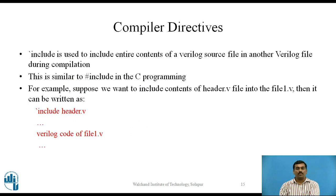The second most important compiler directive is backtick include. Backtick include is used to include the entire contents of a Verilog source file in another file during compilation. This is similar to #include in C and is typically used to include header files which contain global or commonly used definitions. For example, to include contents of header.v into file1.v, it can be written as `include header.v followed by the Verilog code describing file1.v. The .v extension denotes a Verilog file.